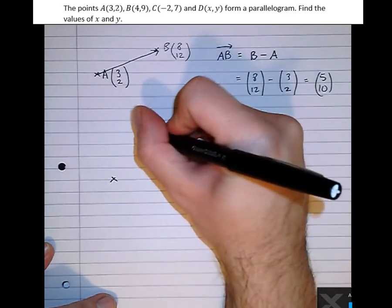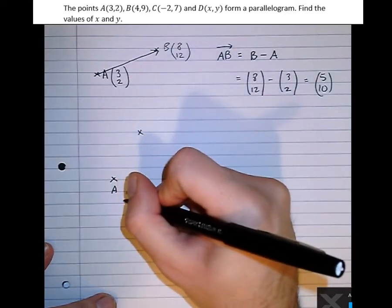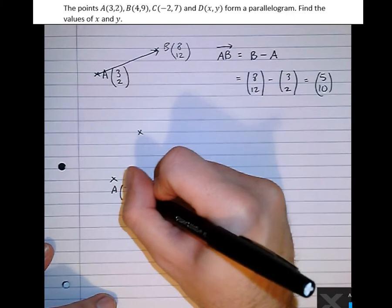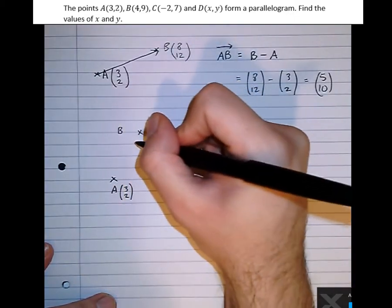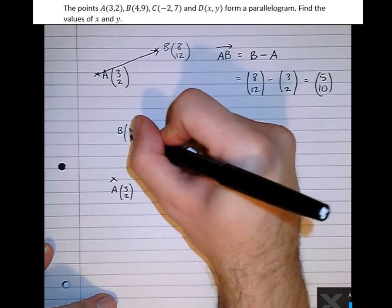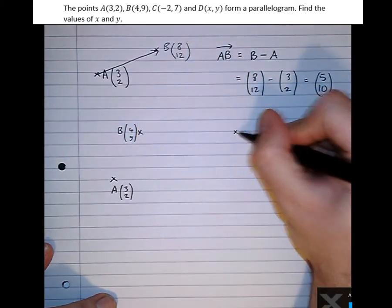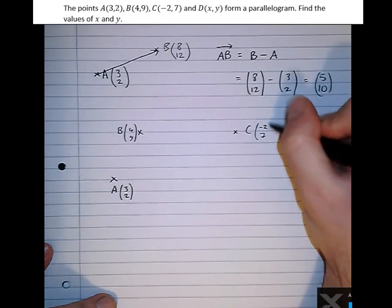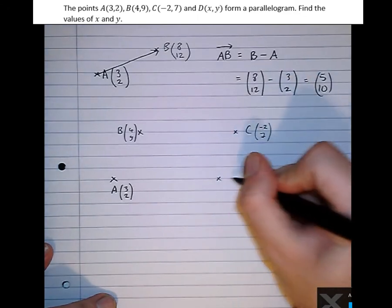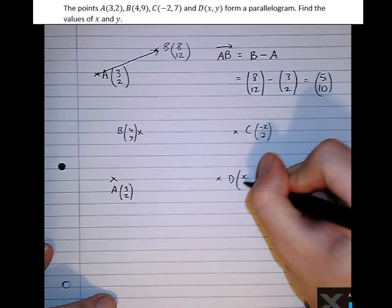Okay, it's a good idea to draw a diagram. So A has position (3, 2), B has position (4, 9), C has position (-2, 7) and D has position (x, y).